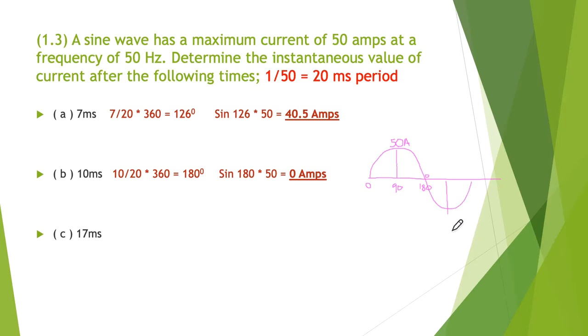Our final answer: if we have 17 milliseconds, what proportion is 17 of 20 overall? Times 360 is 306 degrees. So the sine of 306 multiplied by 50 is minus 40.5 amps.